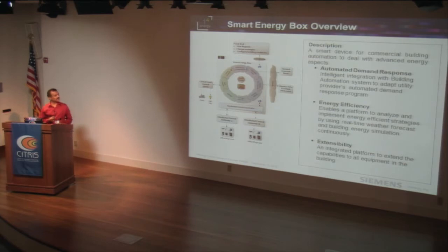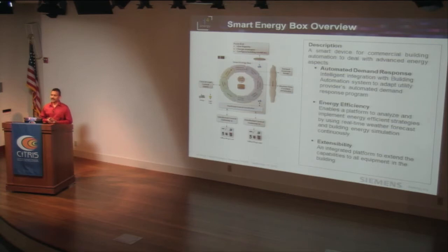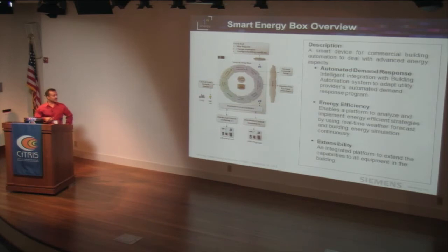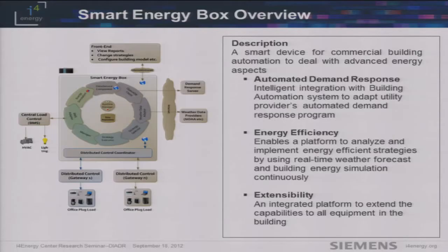The building management systems are the ones who control central HVAC as well as the lighting system. The box is also extended to distributed load control — such as office plug loads which are not centrally controlled — so they can still be part of demand response or energy efficiency implementations.